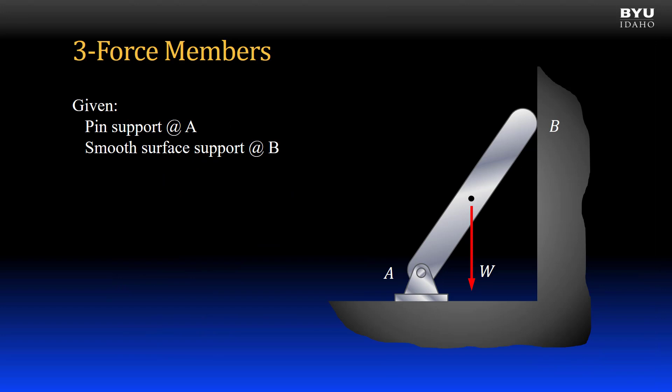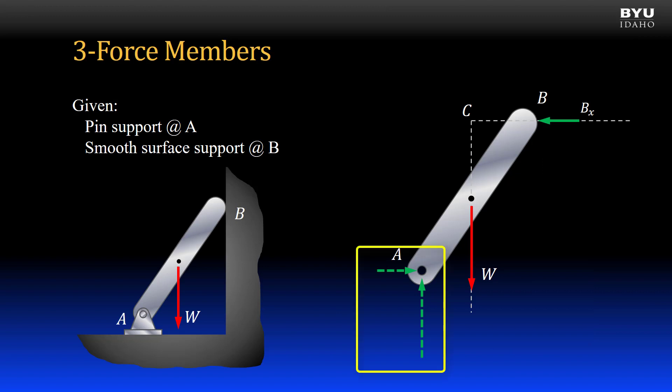Here's another example of a three-force member. This member has a pin support at A, a smooth surface support at B, and is acted on by its own self-weight. A free body diagram shows the horizontal and vertical components of the support reaction at point A, and the smooth surface support reaction acting normal to the surface. The horizontal and vertical support reactions at point A are just components of a single reaction force. The line of action of the force must also pass through point C.